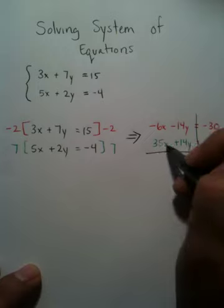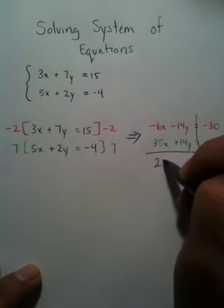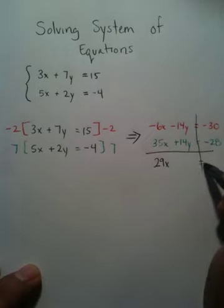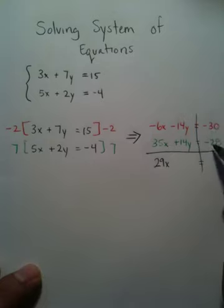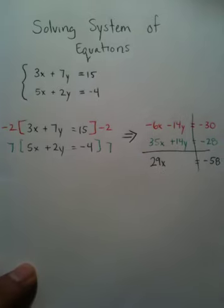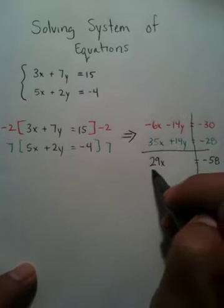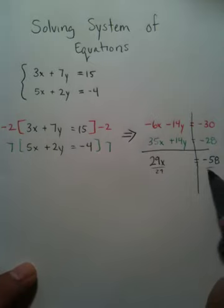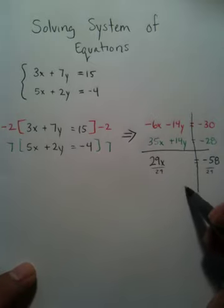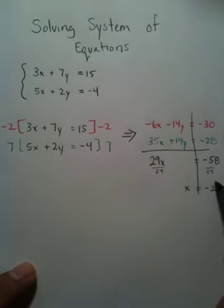Combine your x's. 35x and a negative 6x makes 29x. A negative 30 and a negative 28 make a negative 58. And again, you're just going to solve for x by dividing by 29. Divide this by 29, divide this by 29. x is going to equal negative 2.